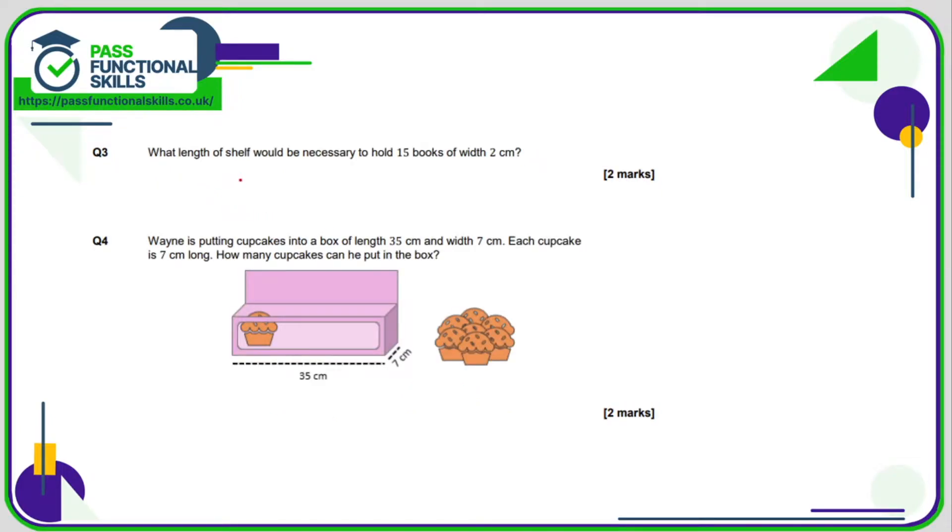Question three, what length of shelf would be necessary to hold 15 books of width 2 centimeters? Well, if they're 2 centimeters wide, and there are 15 of them, then in total, the total width is 15 times 2, which is 30 centimeters. So therefore the shelf would need to be a minimum of 30 centimeters.